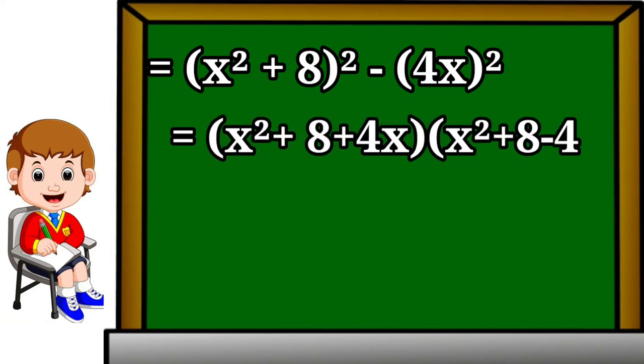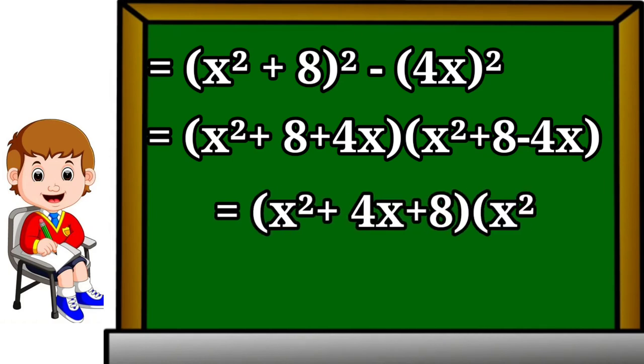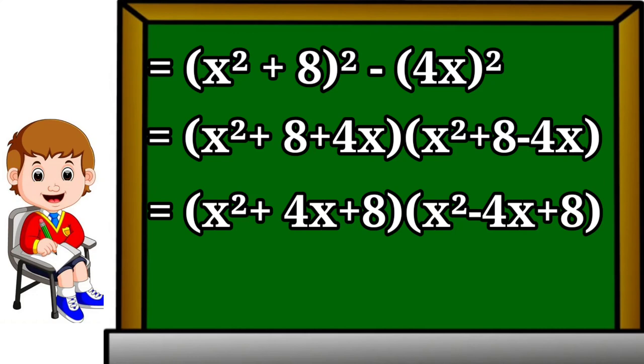Writing in descending order: (x² + 4x + 8)(x² - 4x + 8). Good luck, Allah Hafiz.